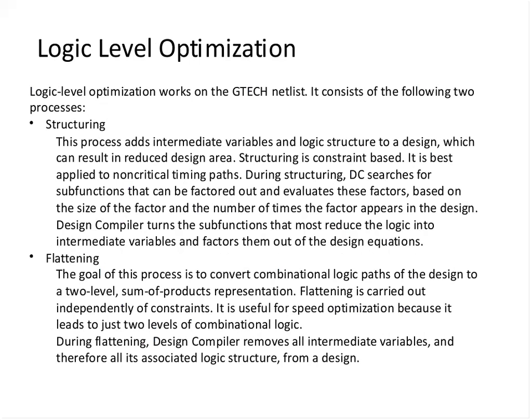After this high-level optimization takes place, the netlist we get is the GTECH netlist. Now it consists of two processes. Let us look at them in reverse order - let us look at flattening first. When flattening, what DC will do is it will pick up a combinational design and represent it using a two-level sum-of-products expression.